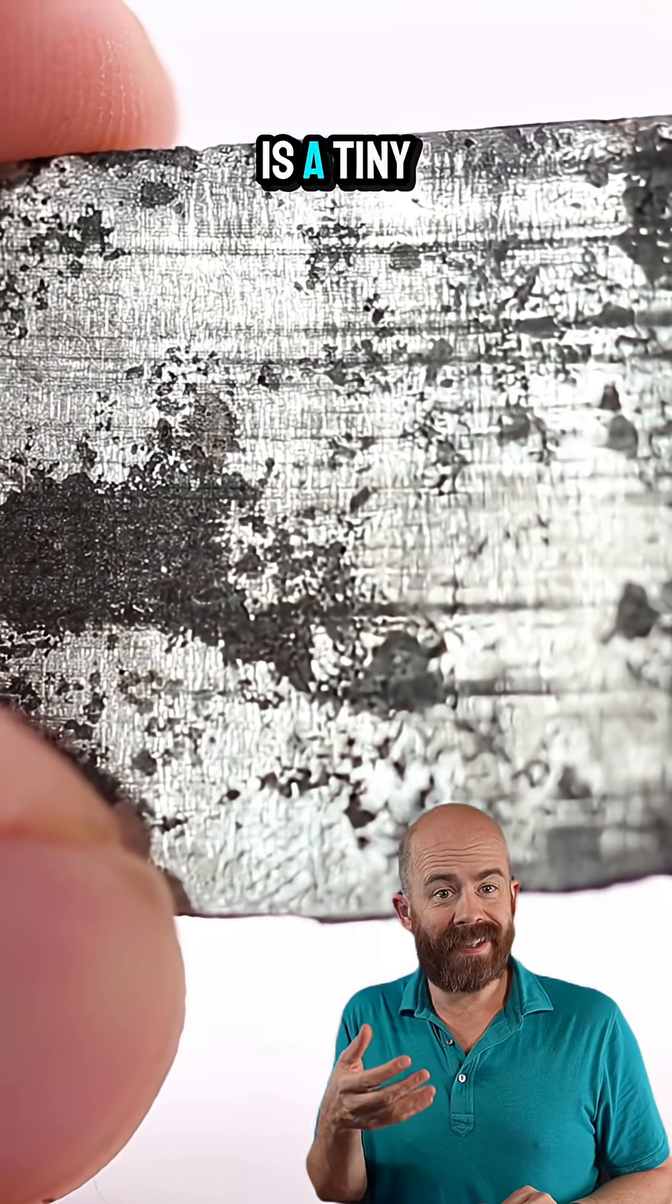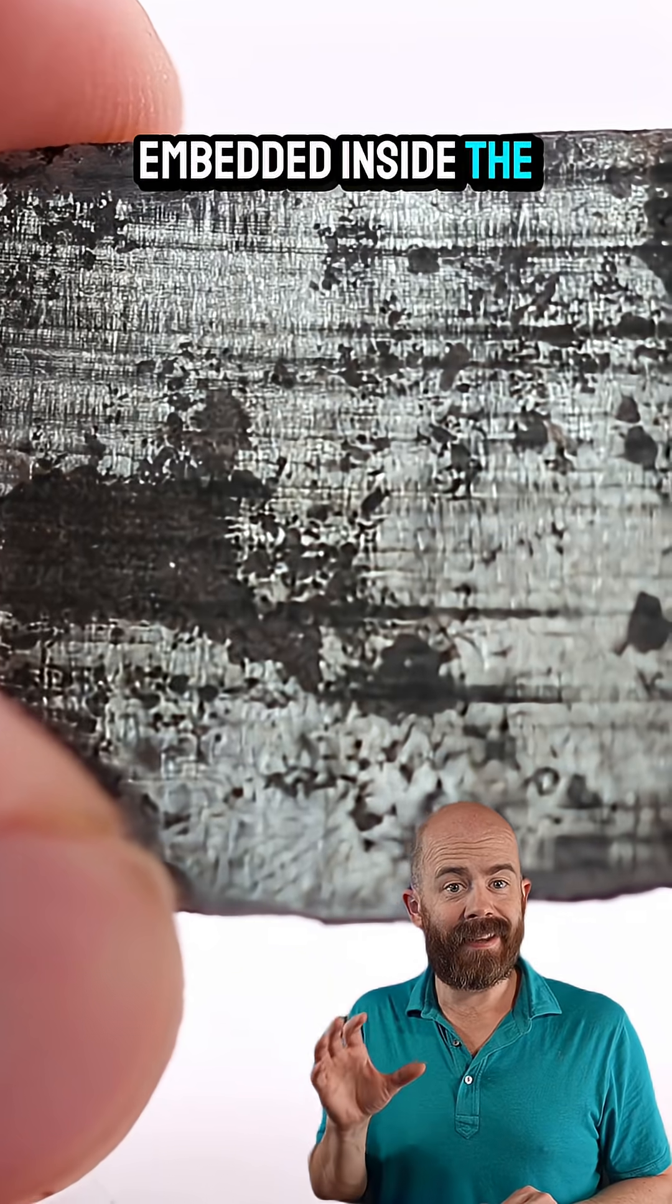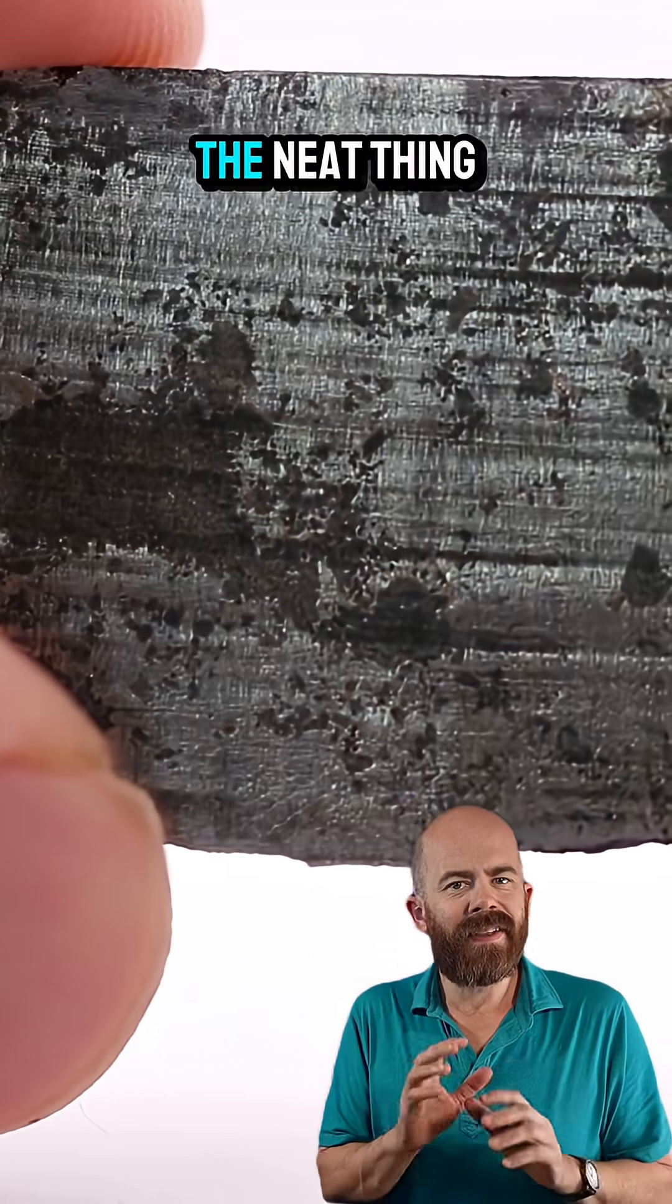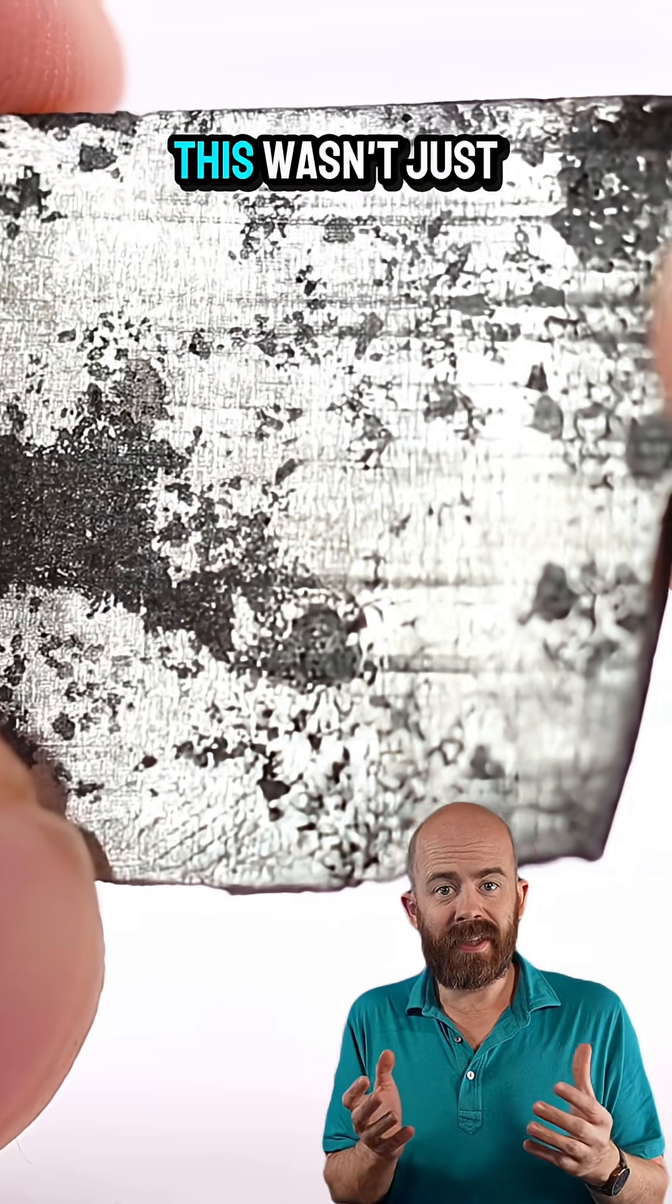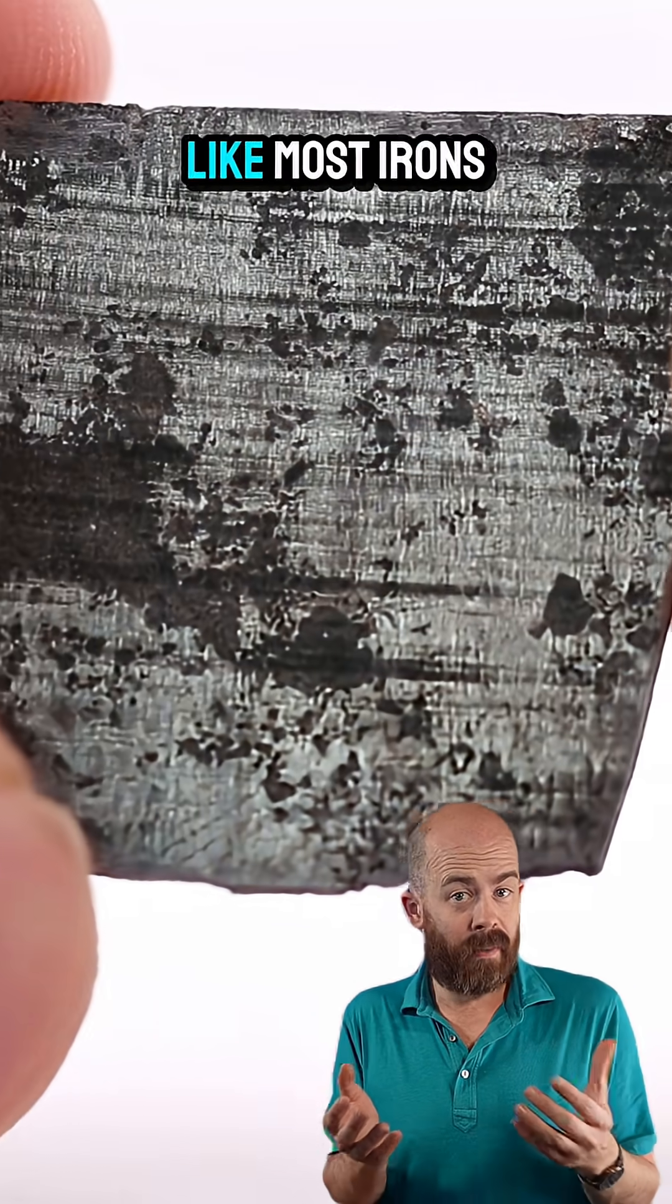What we really have here is a tiny rock garden embedded inside the nickel and iron that makes up most of the mass of the stone. The neat thing here is that the inclusions tell us this wasn't just a piece of planetary core like most irons.